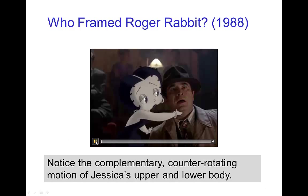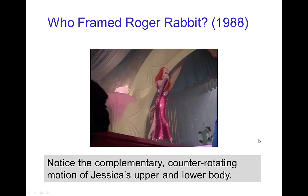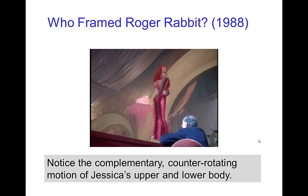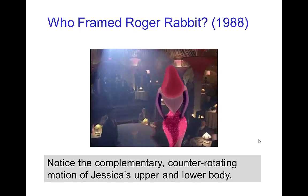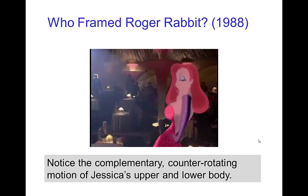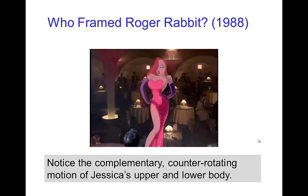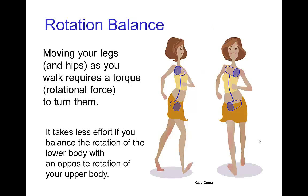Here are some nice examples of counter-rotating motion of the hips and shoulders from Jessica Rabbit's routine in the nightclub. This rotation balance helps you move more efficiently, in that it takes less effort and less torque to rotate the upper body opposite from the lower body.